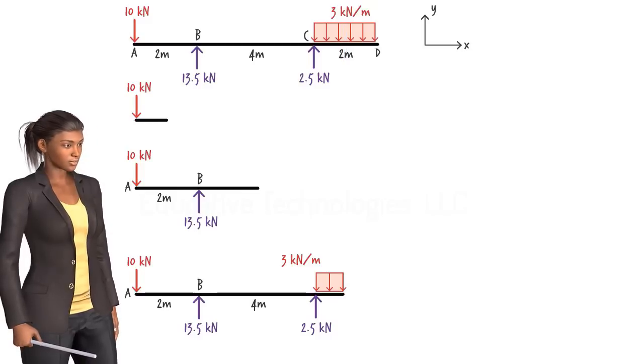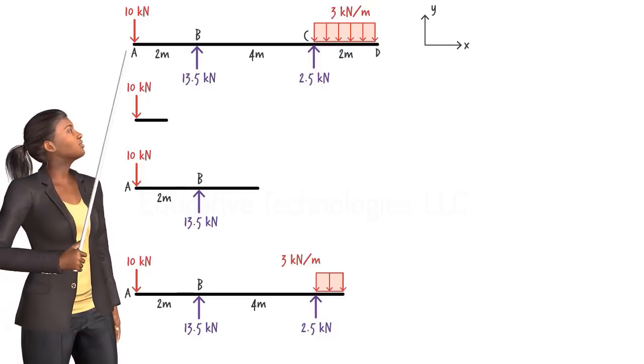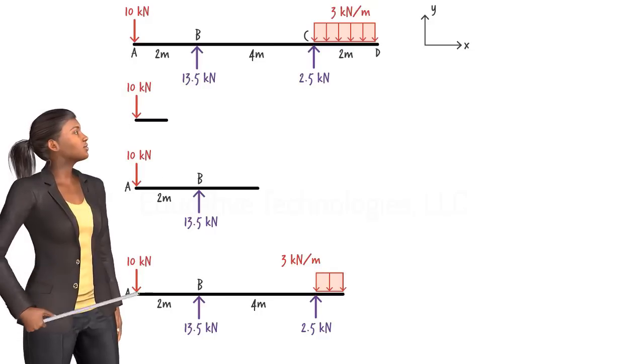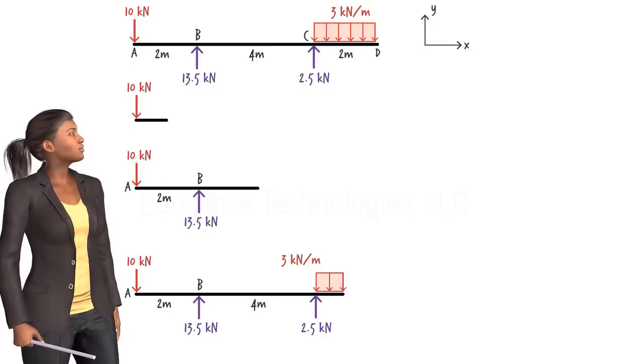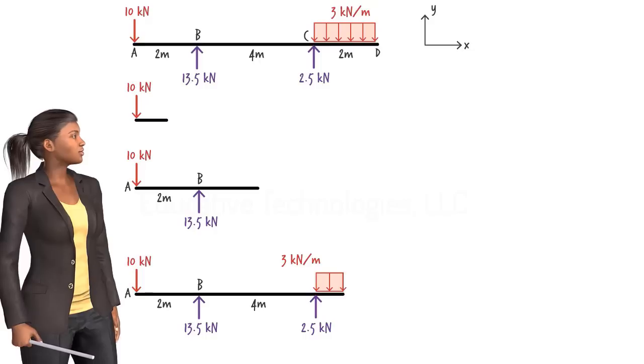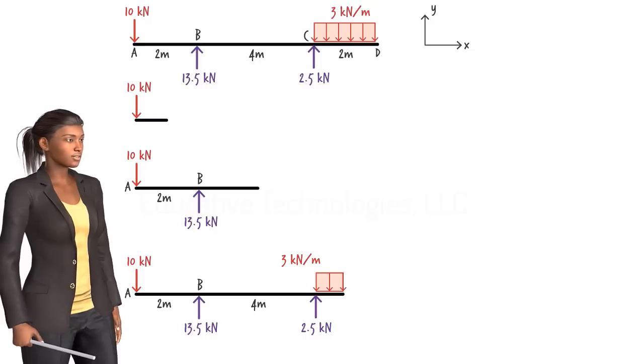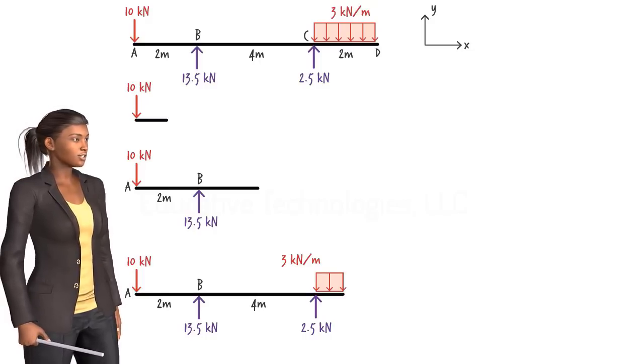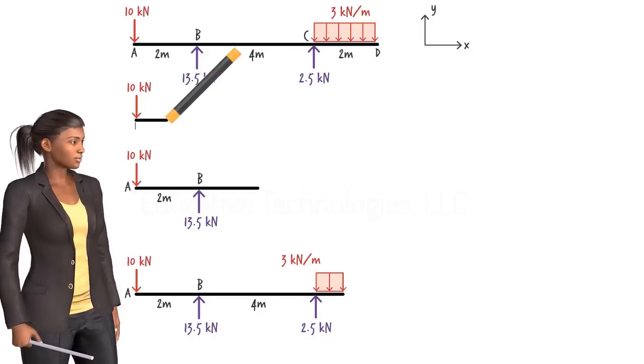Let's assume that the origin of the coordinate system is placed at point A. Since we are not cutting the beam at a specific point, rather we are cutting it at an arbitrary point, we are going to refer to the distance from the origin to the cut point as X.